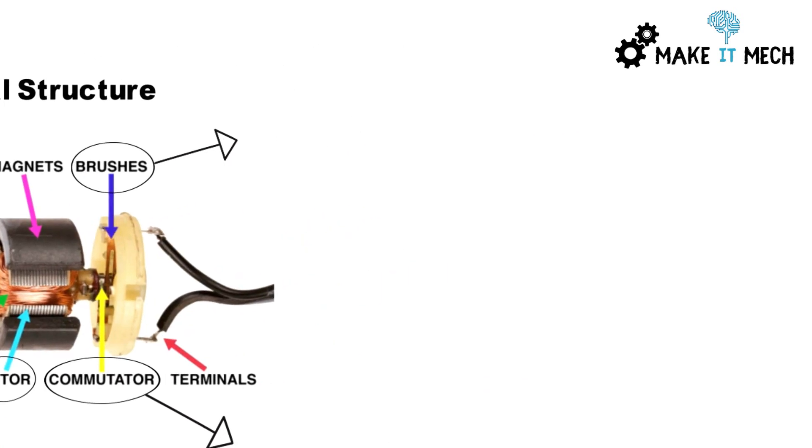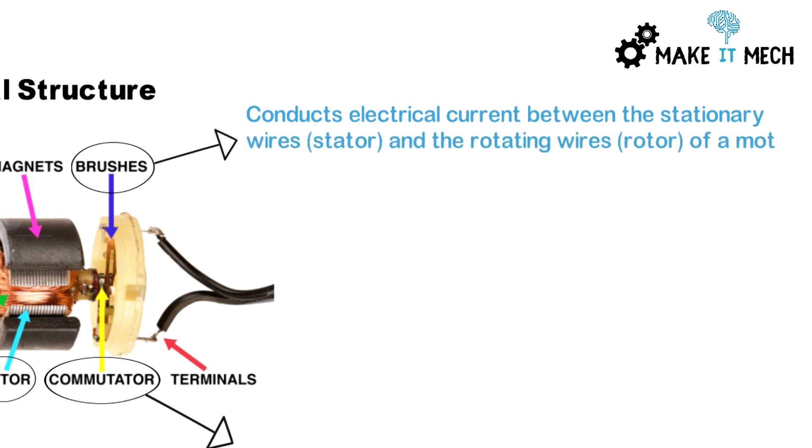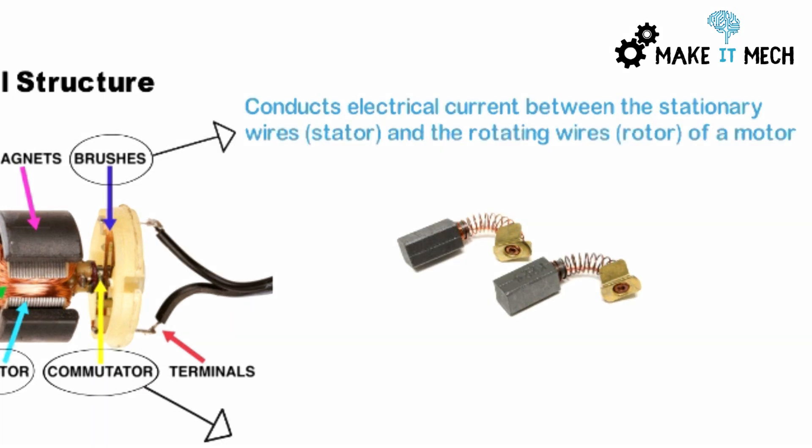The brushes in DC motors are used to conduct current between the fixed part, the stator of the motor, and the rotating part, the rotor of the motor. As the rotor is the rotating part in the DC motor, the brush is used to switch the current position to the winding of the rotor.